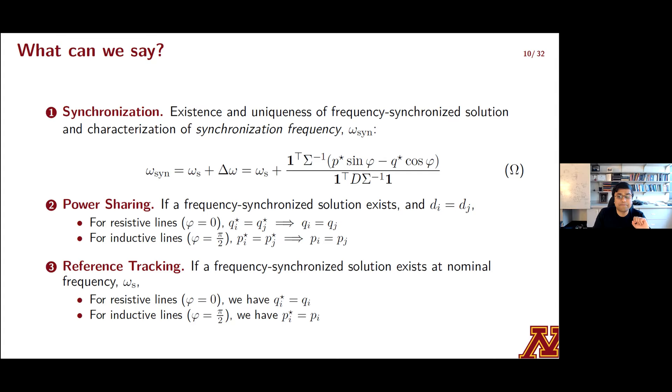So let's take a look at synchronization. We can obtain conditions for existence and uniqueness of synchronized solutions in these networks of GFM IBRs, and we can answer questions like when GFM IBRs will synchronize and to what frequency. The equation tagged omega provides a closed form expression for the synchronization frequency, omega subsyn. This is offset from the electrical radian synchronous frequency, omega s, and this would be 2 pi 60, 2 pi 50 radians per second. And that offset is captured by this term delta omega.